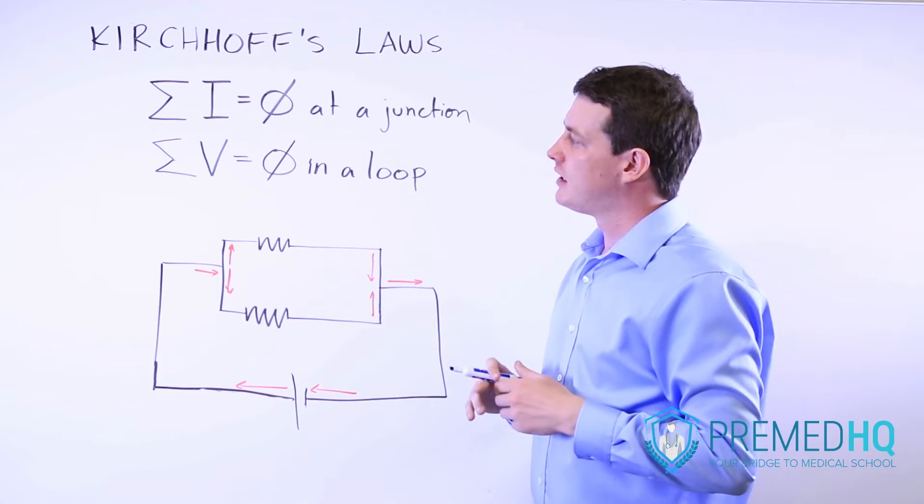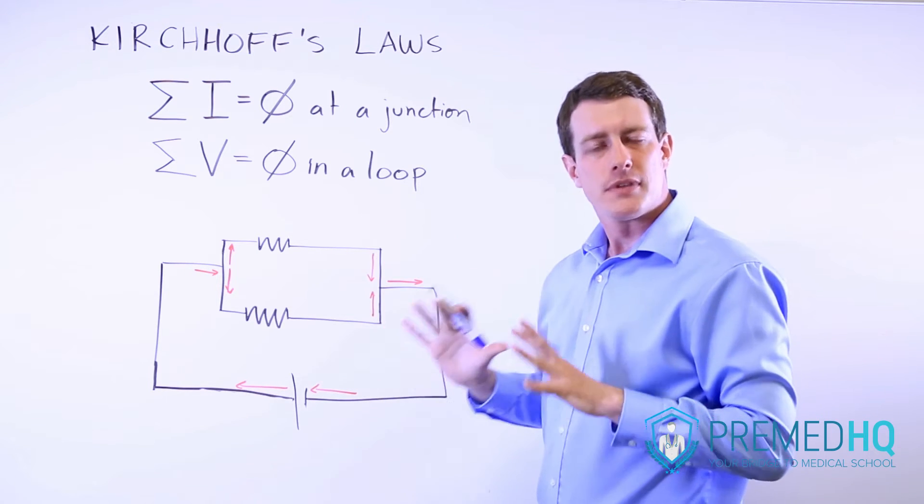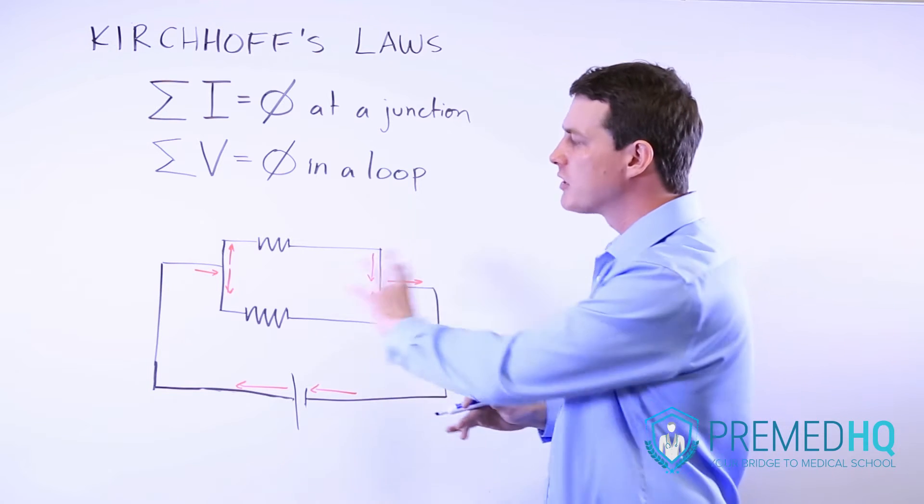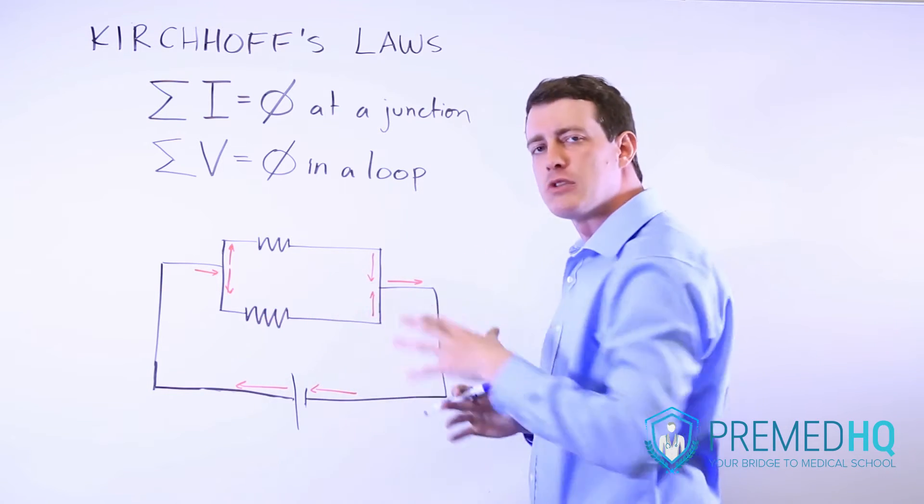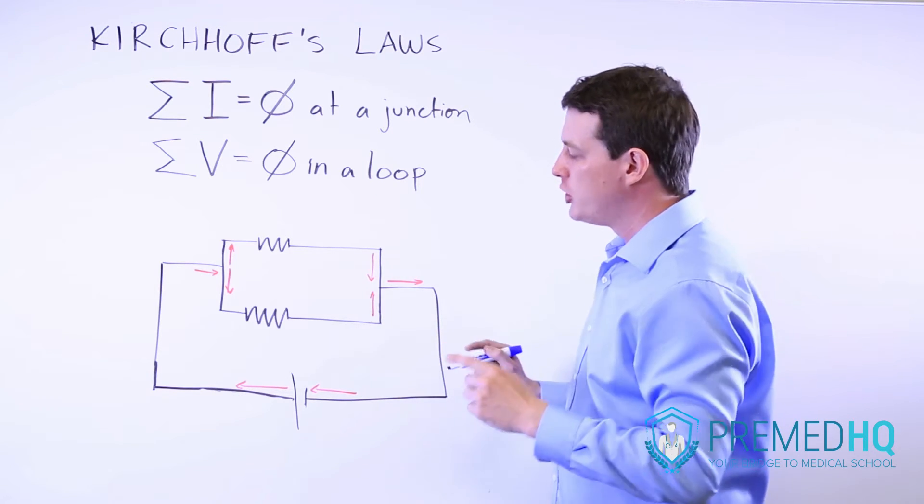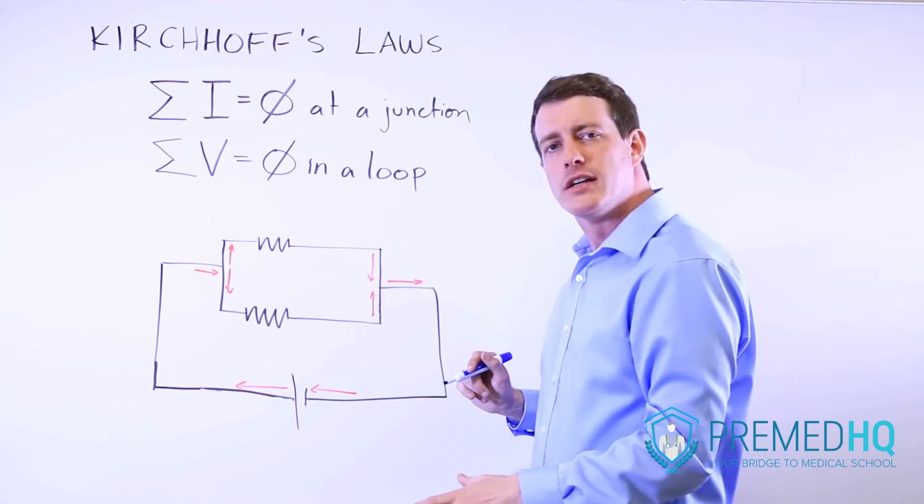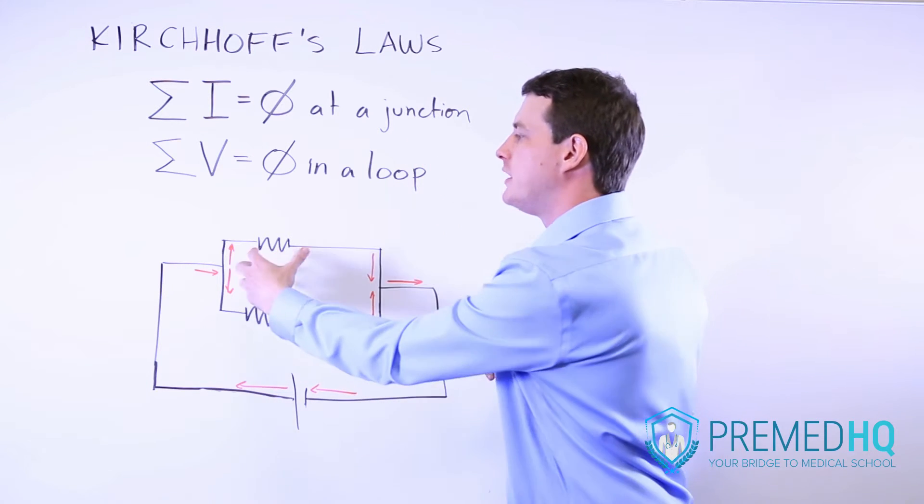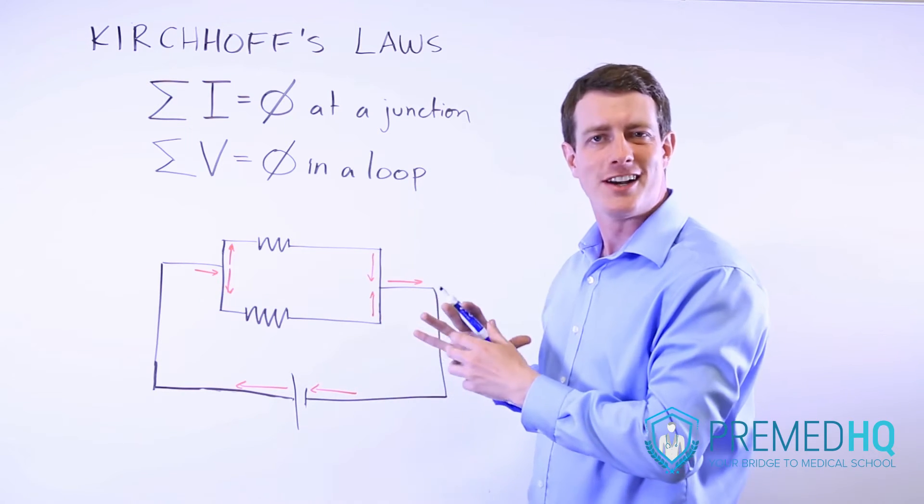The other of Kirchhoff's laws stated that the voltage in any loop equals zero. And so if we were to simplify this circuit by taking these two parallel resistors and combining them into an equivalent resistor, we would know that the voltage added by this battery was equal to the voltage used by these resistors or this equivalent resistor here.